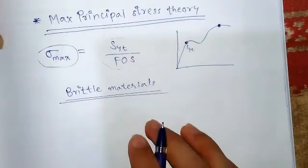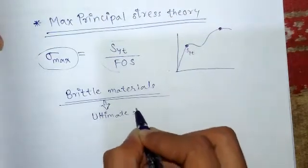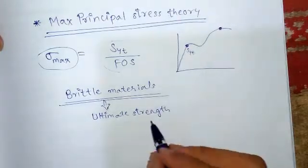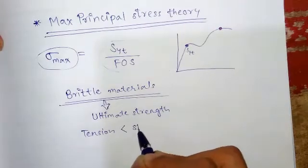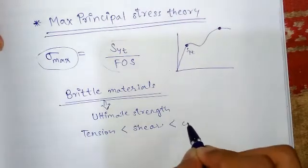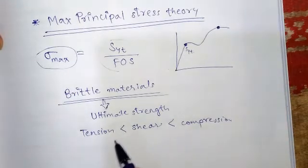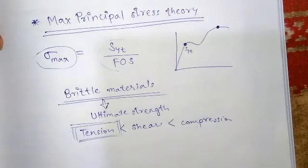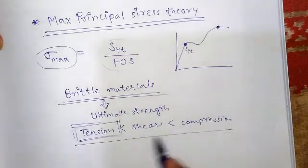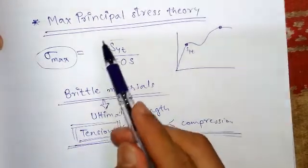Maximum principal stress theory is used in the case of brittle materials. The reason is that ultimate strength in brittle materials is the least in tension, higher in shear, and highest in compression. This shows that brittle material is not safe in tension — it has a fear of tensile failure. If you make the brittle material safe in tension, you are automatically making it safe in shear and compression as well. That is the reason maximum principal stress theory is used for brittle materials.